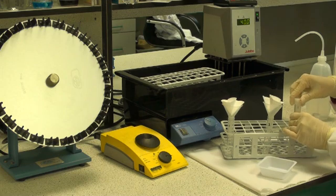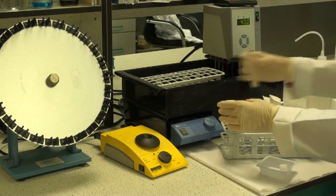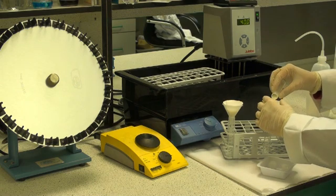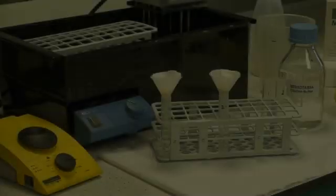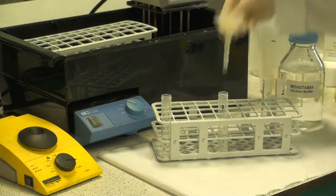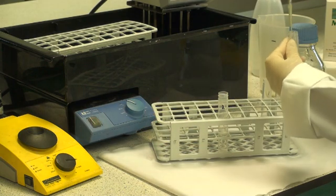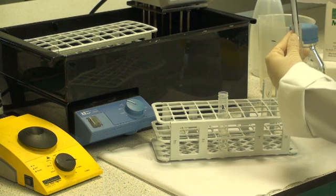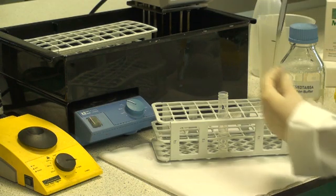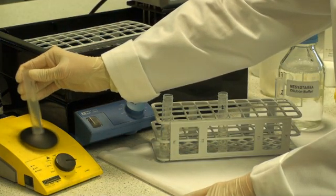Filter this solution through glass fiber filter paper. Remove the filter funnels and then transfer 0.2ml of the filtrate to 4ml of dilution buffer. Mix this thoroughly and this solution will be used in the assay.